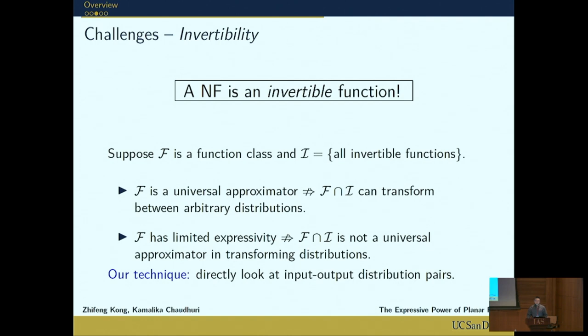Suppose F is a function class and I is a set of all invertible functions. Even if F is a universal approximator in a function space, it does not imply that its invertible subset can transform between arbitrary distributions. For instance, suppose F is a set of piecewise constant functions. It's a universal approximator, but a piecewise constant function is not invertible, so it doesn't have an invertible subset.